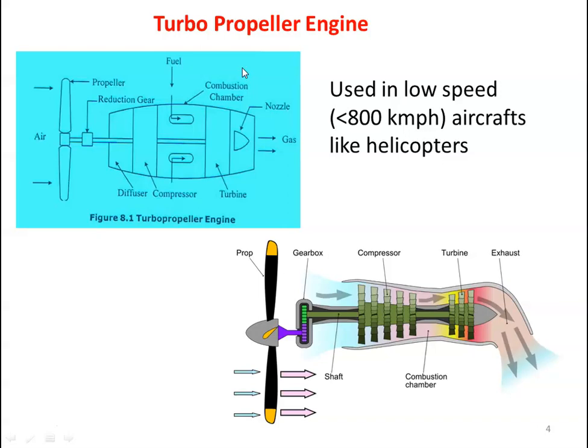The air then enters the compressor, where it is mechanically compressed. The compressor is driven by the turbine. The compressor is an axial flow type — the flow is parallel to the axis. Looking at the cross section, we have multiple stages: there are five rotor blades with stators in between, making a five-stage compressor. This multi-stage compressor is used for compressing the air to higher pressure.